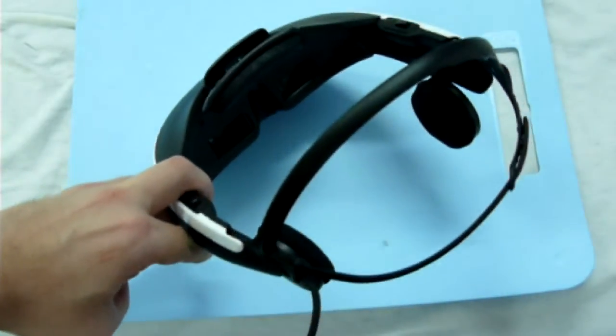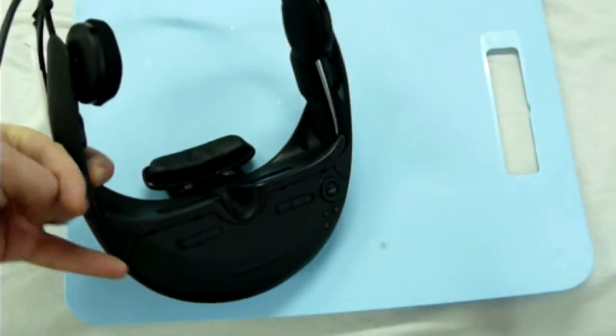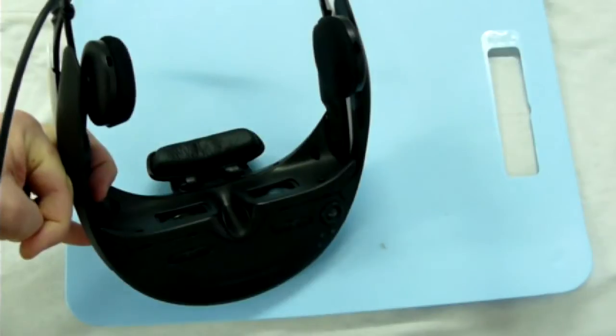So let's start. First, unscrew 4 screws holding the upper plate near the forehead pad.